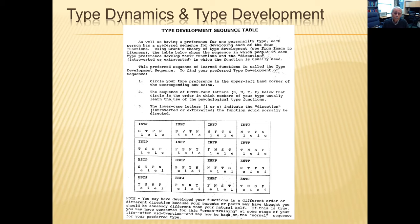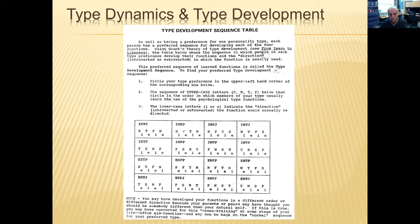Developmentally, theory holds that in the second half of life we would integrate our tertiary function — for me, introverted feeling — around age 30 to 35. And if we're open in later life, we may develop some awareness of our most unconscious inferior function — for me, extroverted sensation. When I take a walk, I like to see things, hear birds, and imagine what a bird experiences without words. It's very relaxing for me.